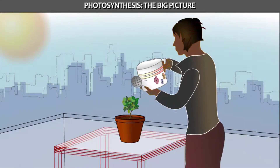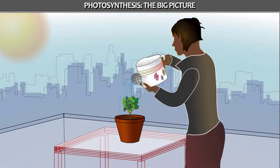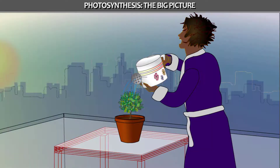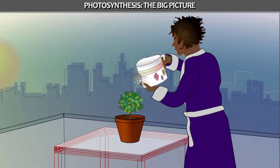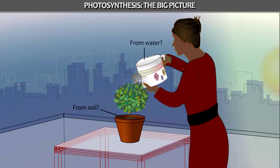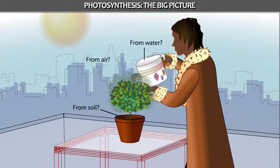Consider that in five years, a tree in a big planter can increase its weight by 150 pounds as it grows. Where does the new tissue come from? From the soil, from water, or possibly from the air?